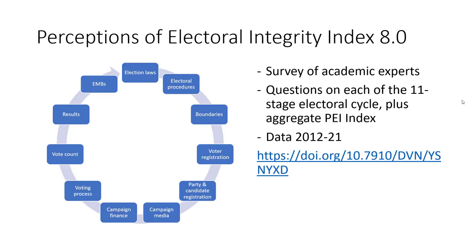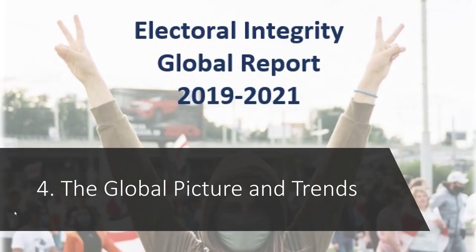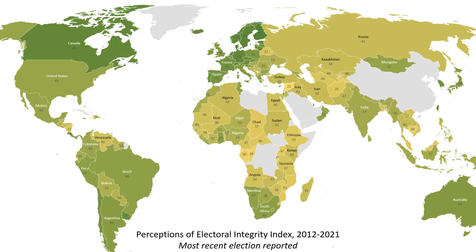The survey covers all aspects of the electoral cycle — not just electoral districting or voter registration, but all aspects and preparations involved in running an election. The global picture and trends are available to download in the Global Electoral Integrity Report from our website. You can see from this a global ranking of election quality, scored on a range of 0 to 100. For example, elections in Ethiopia rated at 34, elections in India rated at 57, and elections in the United States rated at 61.